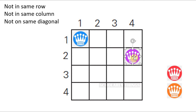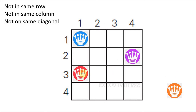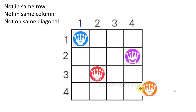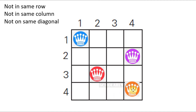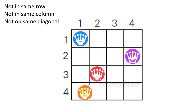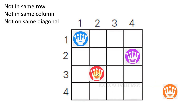For Queen 2, find the next possible choice — that is column 4. Now continue with Queen 3: can't place it in column 1, but you can place it in column 2. Next, Queen 4 — can't place it in column 1 (same column as Queen 1), column 2 (same column as Queen 3), column 3 (same diagonal as Queen 3), or column 4 (same column as Queen 2). So Queen 4 can't be placed anywhere, so backtrack to Queen 3.